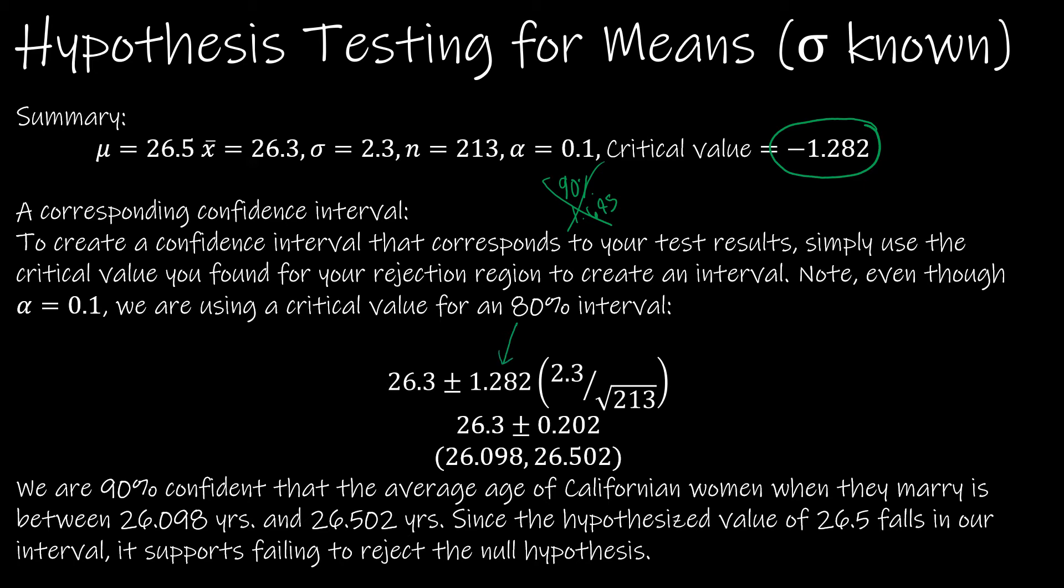So I'm going to use that same interval formula, which says this is x bar plus or minus my critical value, and then sigma divided by the square root of n. Let Excel do all of that work for you. And then we're going to say with a 10% level of significance, or we're 90% confident, whichever one you want to say, that Californian women, when they marry for the first time, are between 26.098 years and 26.502 years.